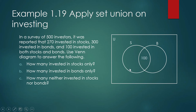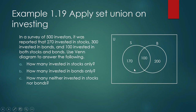Since 100 invested in both stocks and bonds, we put 100 in the intersection. It was reported that 270 invested in stocks; since we already have 100 in the intersection, the number of investors in the stocks-only region is 170 — and together 170 plus 100 equals 270. For bonds, 300 invested, but we already have 100 in the intersection, so the remaining 200 goes in the bonds-only region. That region represents investors who put their money in bonds only, while the other region represents investors in stocks only.